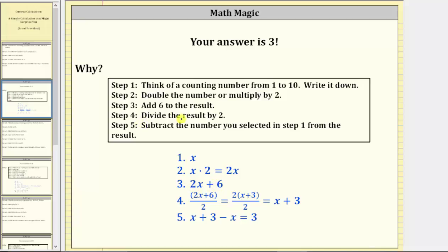Step four was to divide the result by two. If we divide the quantity two x plus six by two, we can simplify this quotient by factoring two x plus six. We can factor two x plus six by factoring out the greatest common factor of two between two x and six.